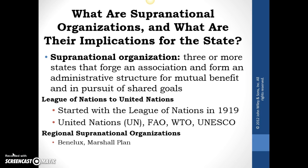First, a definition — and this one should be on your vocab list. A supranational organization is when you have three or more states that forge an association and form an administrative structure for mutual benefit in pursuit of shared goals. In plain terms, three or more countries get together, sign a treaty, and put in some kind of structure to help enforce it, with the idea that everybody benefits and there's a shared goal. Key points: three or more states, an administrative structure monitoring how things are going, and mutual benefit with shared goals.